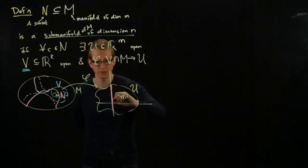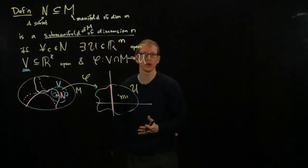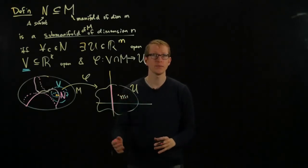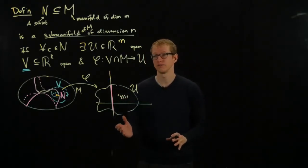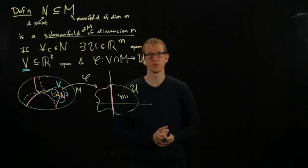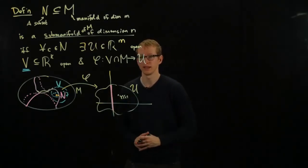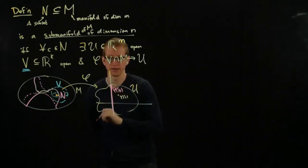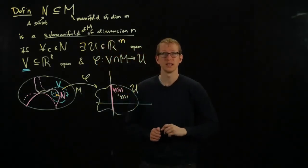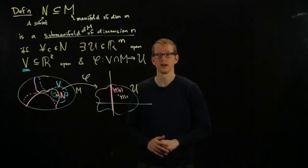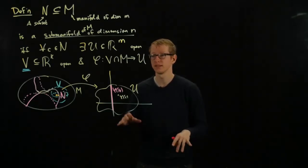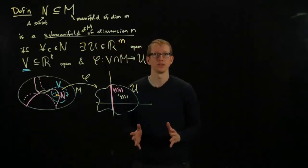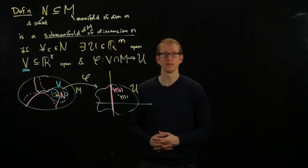So we have an open subset here. Let's call this, we call this U. And let's say this is phi, this is phi of C. Satisfying the very important condition that the sub-manifold N here lies along some vertical line here. So our image lies along one of these sub-planes intersecting U. And that's what a sub-manifold is, a sub-manifold of an ambient manifold.